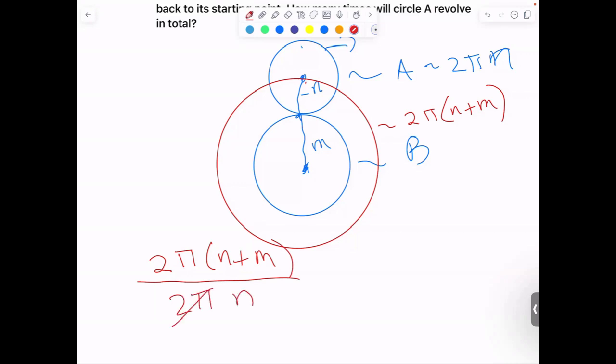The 2π terms cancel each other. And then we have (N + M) divided by N.